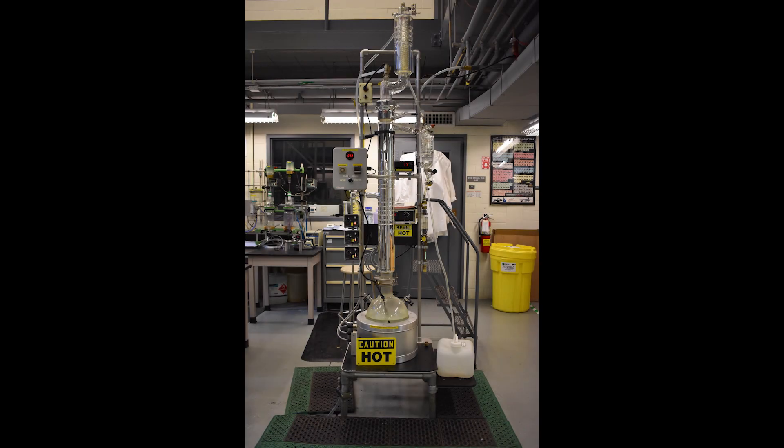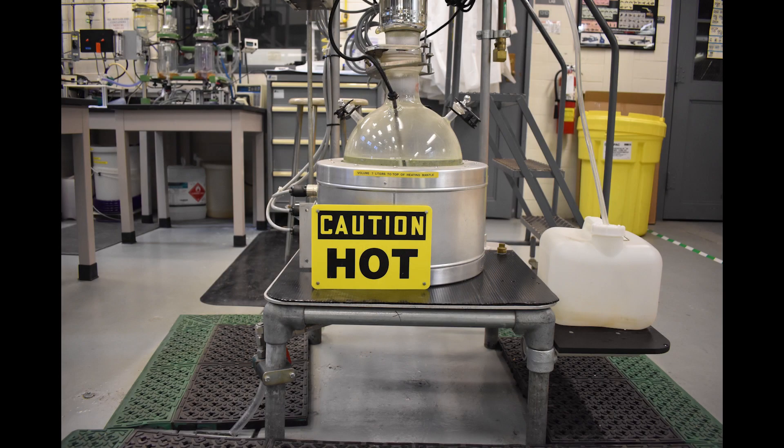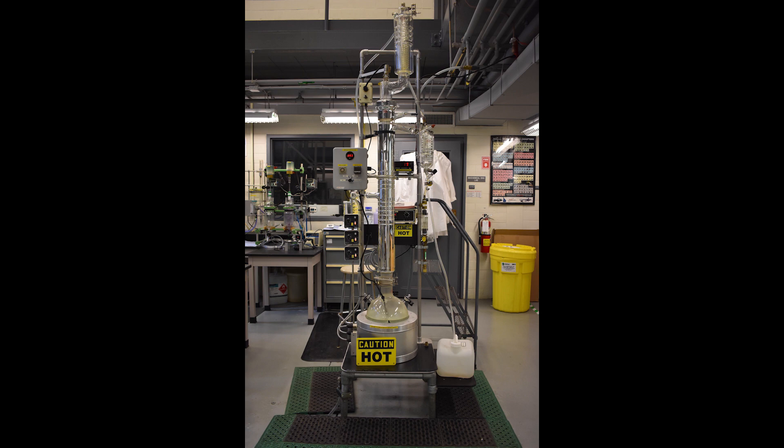The boiling point of the solution is dependent on the chemicals present in the solution. Once the solution is boiling, the vapor will travel up through the column and into the condensers. When operating at total reflux, the vapor will travel to the topmost condenser and will be sent back as a liquid into the column.